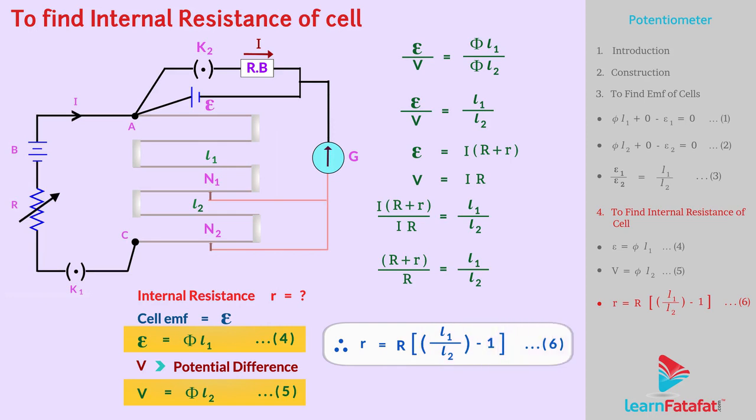Equation 6 is used to find internal resistance of cell. Here we complete this topic. Thanks for watching.